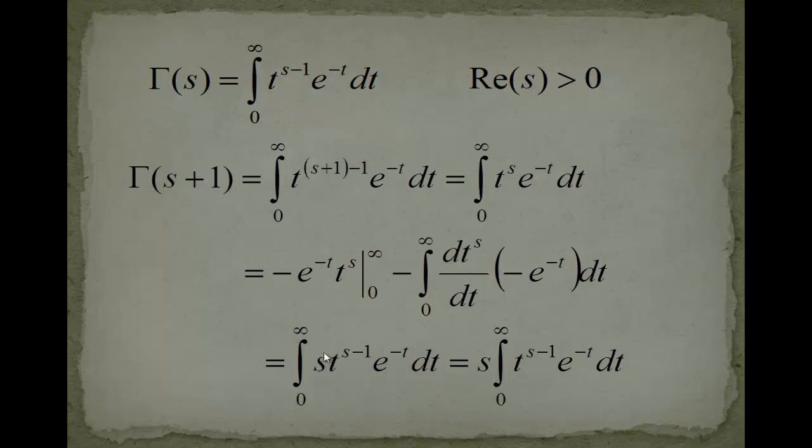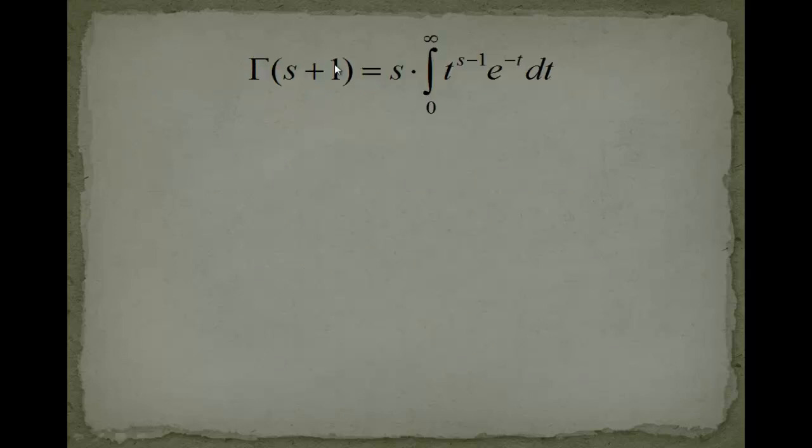Now I just take this s out of the integral because it's actually not part of the integration. It's just invariant, like a constant in an integral, so I take it out. And now let's have a look what we have here. This is actually the gamma function that we had here above. So what we have actually showed is that gamma of s plus 1 is equal to s multiplied with gamma of s. So let's write this down. This is the functional equation of the gamma function. And that's all the magic that was behind that.